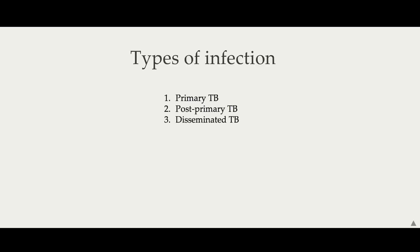The bacilli of TB will continue to proliferate and spread until there is an effective cell-mediated immune response, which tends to take about three to eight weeks. At this point, the spread of infection is arrested and a tuberculin skin test, if performed on the patient, would be positive. Tubercle bacilli then remain dormant within calcified lesions but are capable of reactivation.